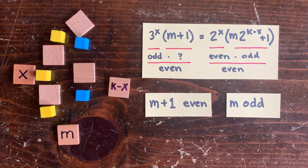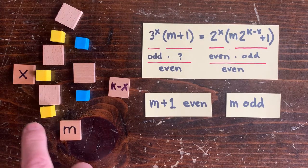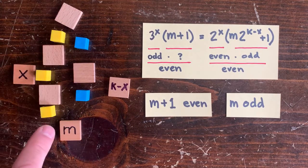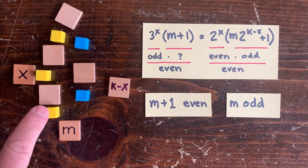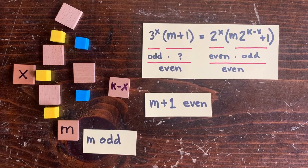So if m plus 1 has to be even, that tells us m has to be odd, which is pretty funny because we already knew that. If m is the bottom of a circuit loop, the first thing we want to do is multiply it by 3 and add 1. And we only do that to odd numbers. But it's sort of satisfying to see it in the formula.